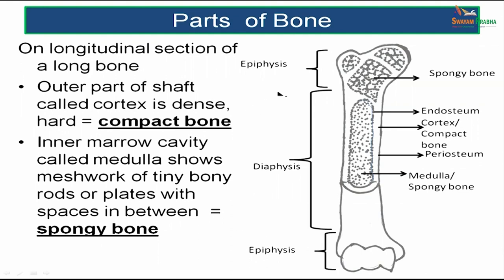Let us study the parts of a bone. This is a diagram of a bone. The upper end is called an epiphysis, the lower end is also called an epiphysis, and the diaphysis is the shaft of the bone. In a longitudinal section, the outer part of the shaft — called the cortex — is very hard, dense, and compact.